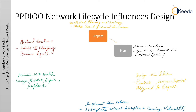Third is the Design phase. The initial requirements determined in the Plan phase drive the network design activities. These activities design the network according to those initial requirements, incorporating any additional data gathered during network analysis and network audit, and through discussion with managers and network users. The network design specification that is produced is a comprehensive, detailed design that meets current business and technical requirements and incorporates specifications to support availability, reliability, security, scalability, and performance.